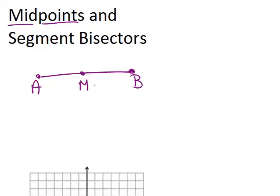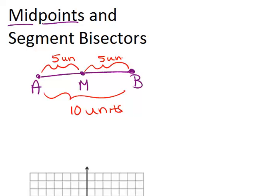Because a midpoint has to be exactly in the middle, if we knew that the whole line segment was 10 units long, that would mean that with the midpoint in there, each half would have to be 5 units long. And in fact, each half is a half. So that's the basic idea of a midpoint.